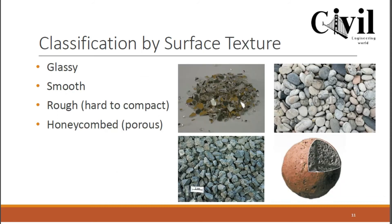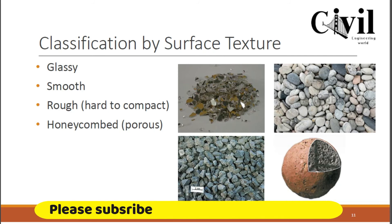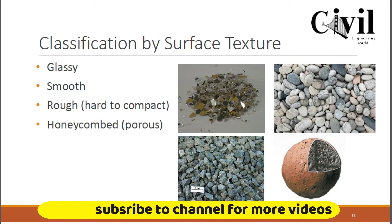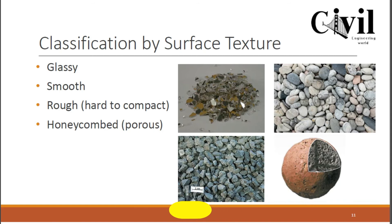We also have classification of aggregates on the basis of texture, such as glossy texture, smooth texture, rough or hard texture, and honeycomb or porous structure. These aggregates can be physically observed and classified clearly based on their texture.